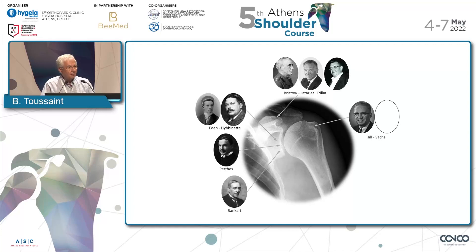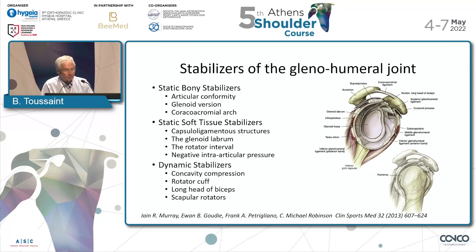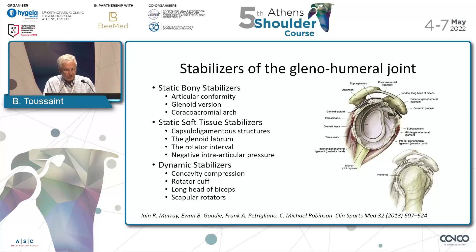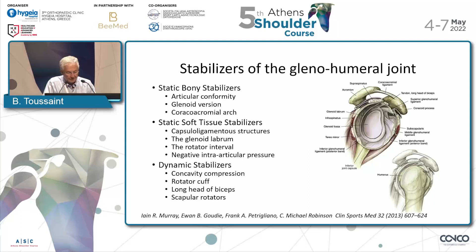Going back to the anatomy and to the definition of the stabilizers of the glenohumeral joint: there is a static bone stabilizer — articular conformity, glenoid version, coracoacromial arch — static soft tissue stabilizers — capsuloligamentous structure, glenoid labrum, rotator interval, and negative intraarticular pressure — and dynamic stabilizers — concavity compression, rotator cuff, long head of biceps, and scapular rotators.